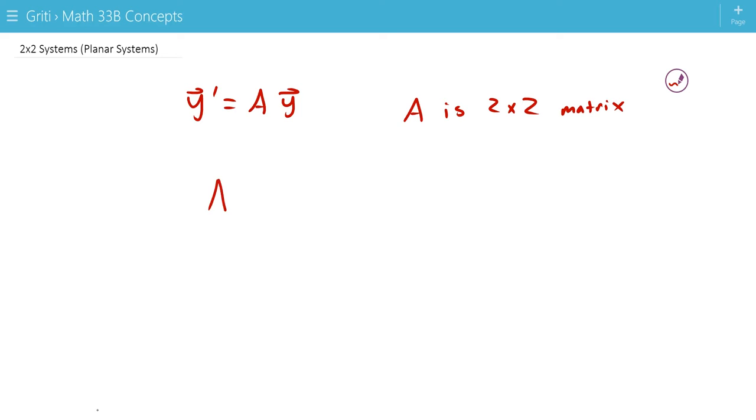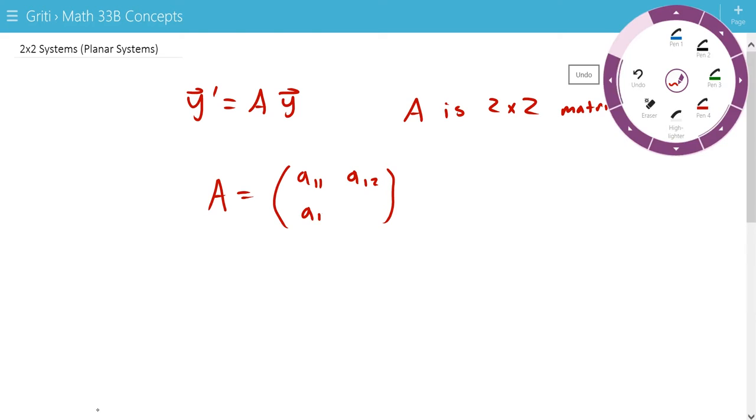So, A is going to look like this. It's going to have 4 components. We'll call the components A11, A12, A21, and A22.